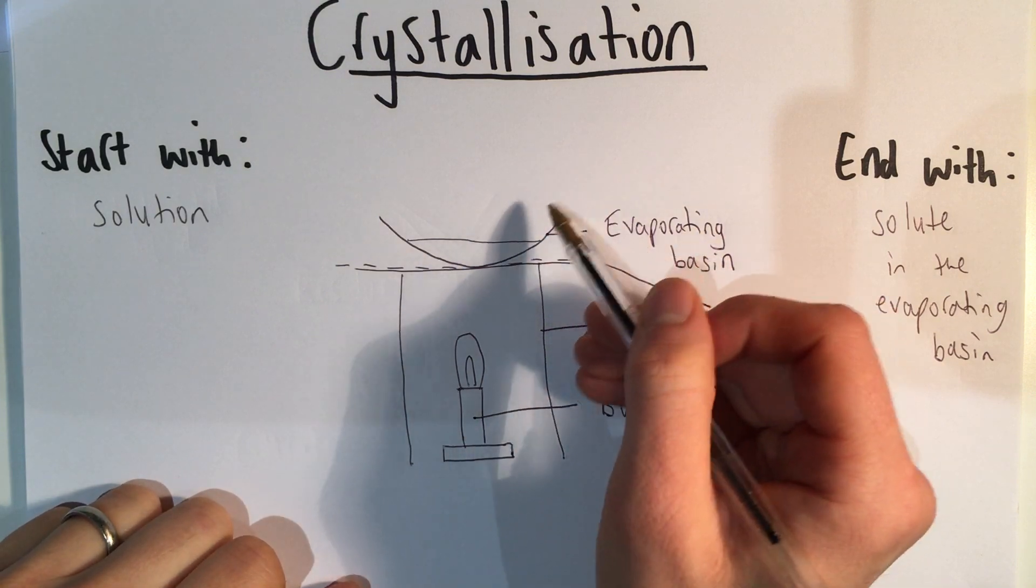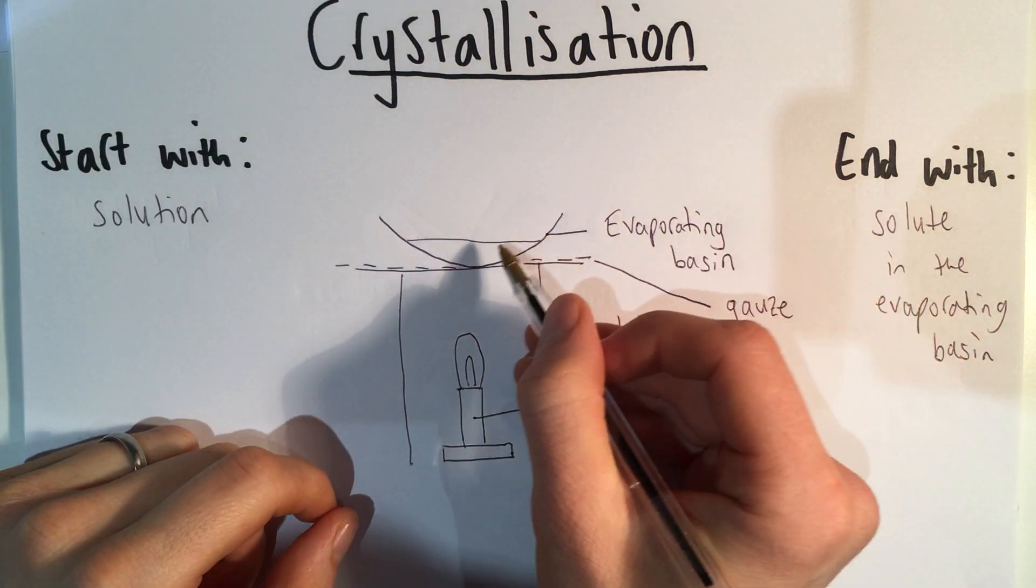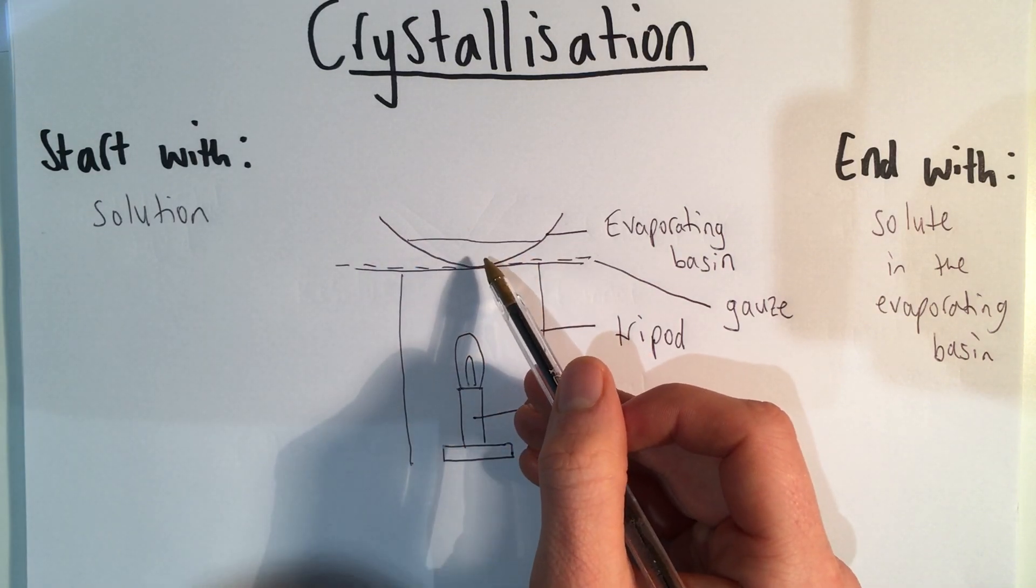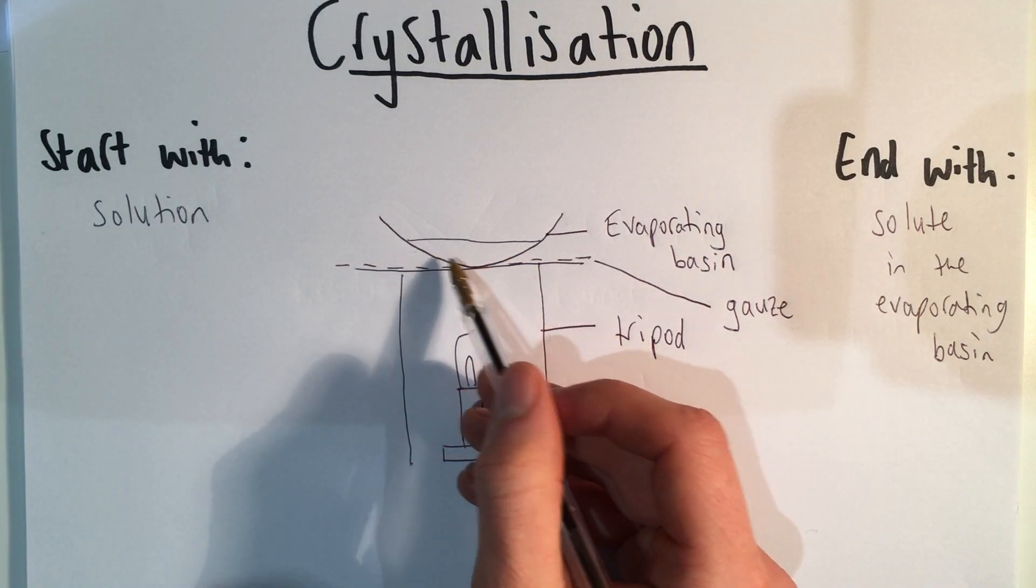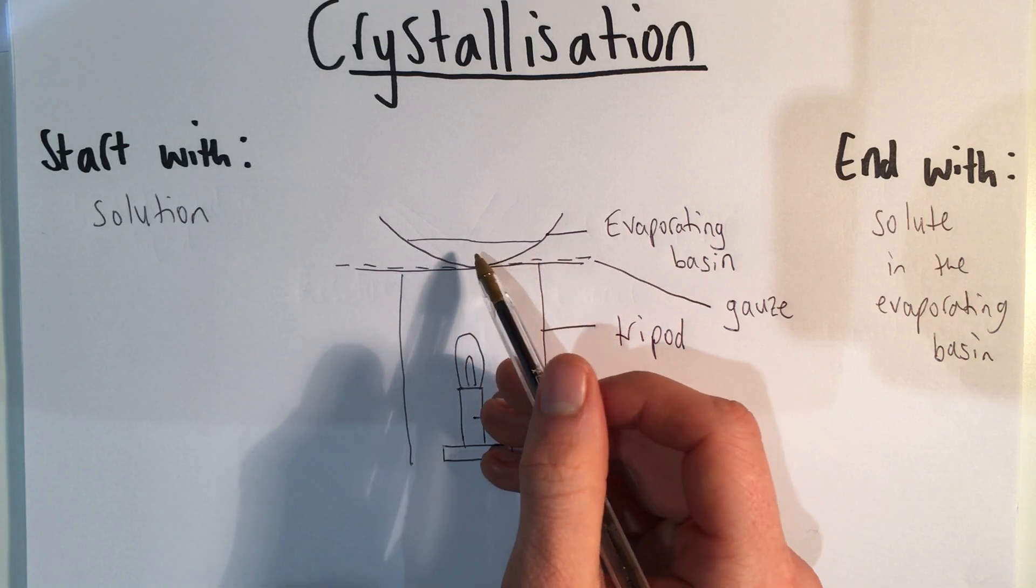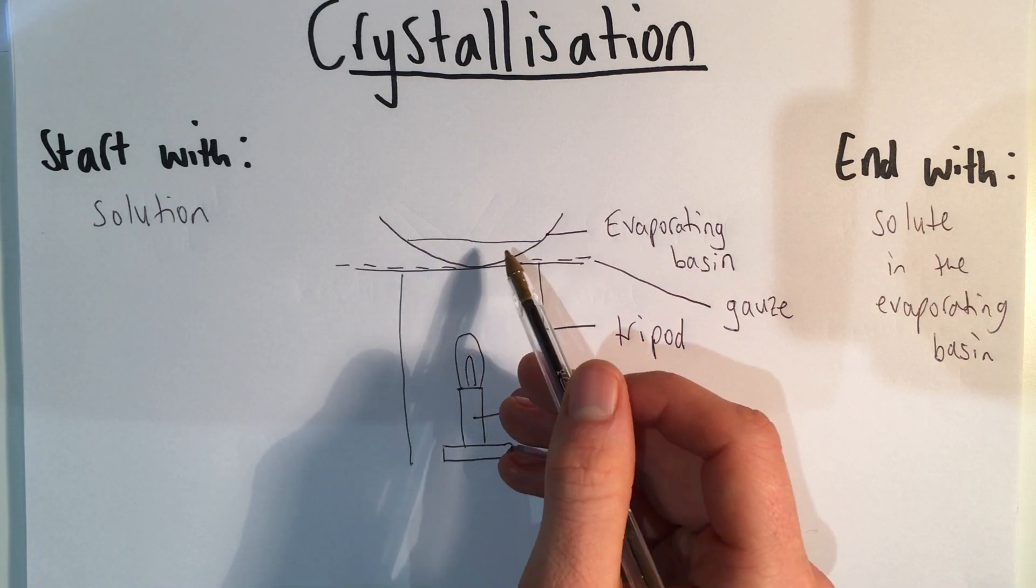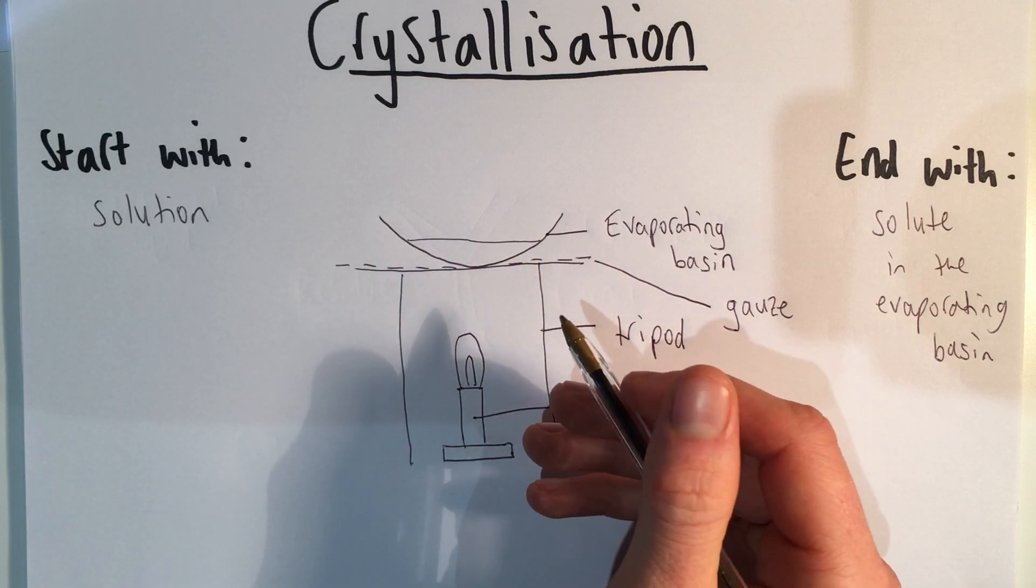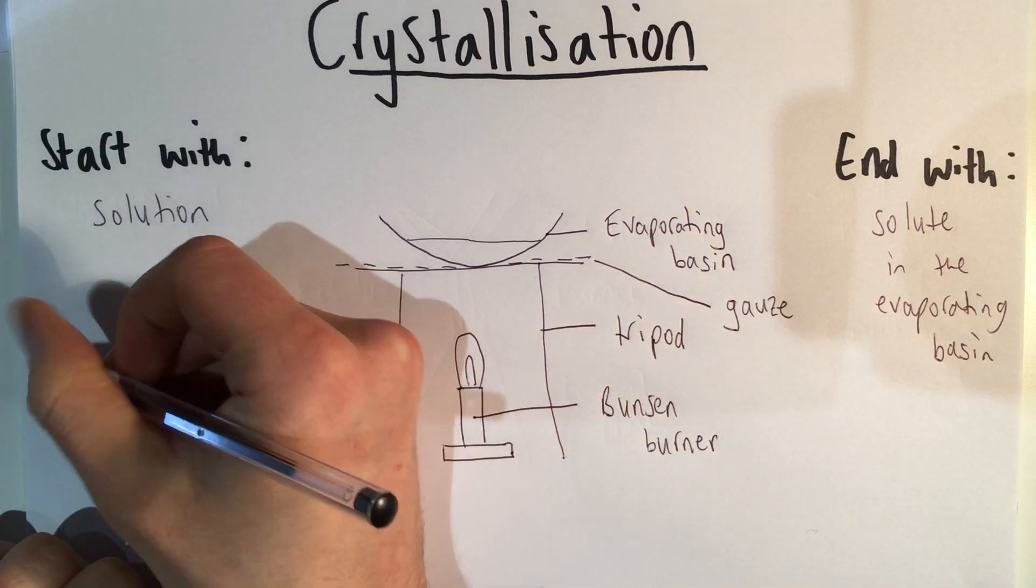The other thing that would happen if we heated it all the way is we'd get very fine powder of the solid, in this case the sugar. It wouldn't be very good quality crystals. We want to obtain high-quality crystals, and the way to do that is to let it evaporate more slowly.